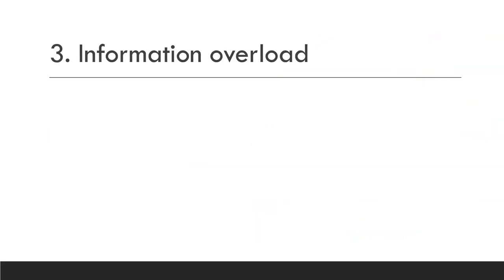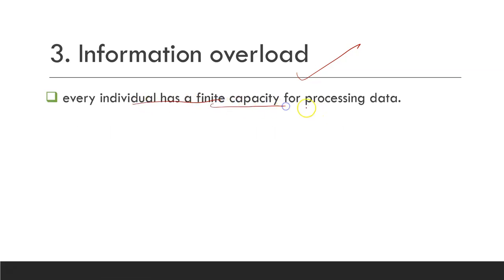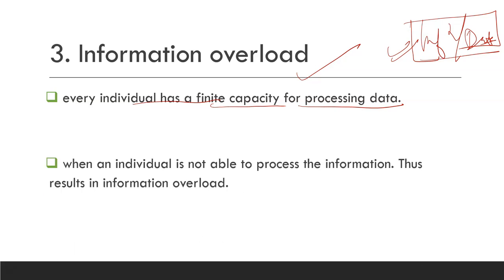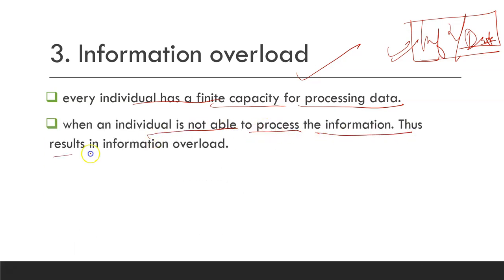Let's talk about the third one and that's called information overload. Every individual has a finite capacity for processing data. Whatever information or data you receive, there is a limit to how much each individual can process. Not every individual can process all the information and all the data. When an individual is not able to process the information, it results in information overload. For example, when you are watching TV, hundreds of advertisements are bombarded on you repeatedly. Eventually your brain cannot retain everything and you forget exactly what you watched because of information overload.